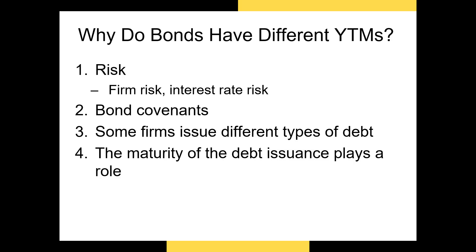There are thousands of different characteristics that a bond can come with, each of which can alter the riskiness of the bond and thus its yield to maturity. We'll go through some of the most common characteristics seen in corporate bonds in a later video. Finally, the time to maturity can affect the yield to maturity. In most time periods we have a normal yield curve, meaning that the longer the maturity of the bond, the higher the yield to maturity, since borrowers have more time to default and interest rates have more time to fluctuate.